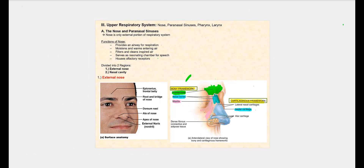Let's begin with the upper respiratory tract, which includes the nose, the paranasal sinuses, the pharynx, and the larynx. The function of the nose is to provide an airway for respiration; it moistens and warms the entering air, filters and cleans the air we breathe in, and serves as a resonating chamber for speech. This is why when you have a congested nose, it affects your voice. It also is where we find the olfactory receptors, which are involved in the sense of smell.